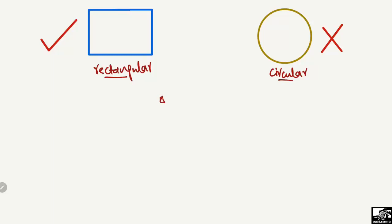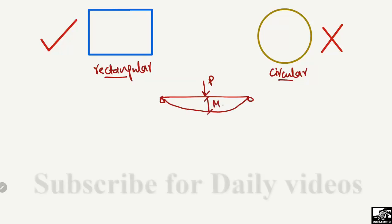For example, this is a simply supported beam and there is a load P acting on this beam. Due to this load P, the beam will deflect and it will show some bending stresses. We will have maximum bending moment here at the midpoint of the beam and maximum deflection.